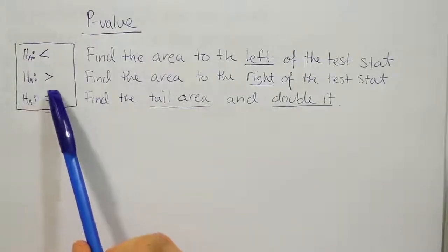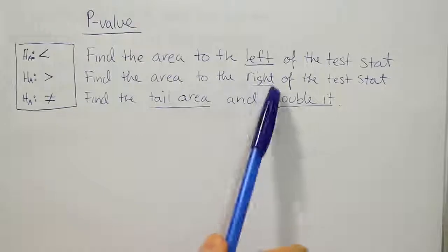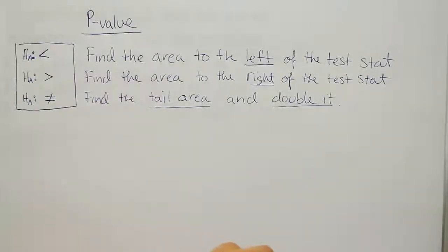If HA has a greater than symbol, that indicates a right tailed test and we would find the area to the right of the test stat in order to calculate our p-value.